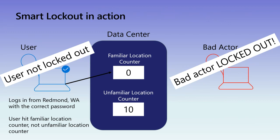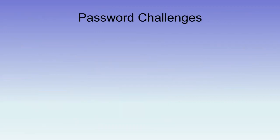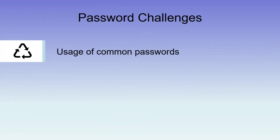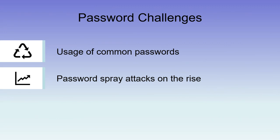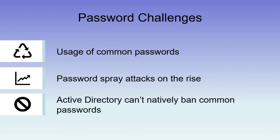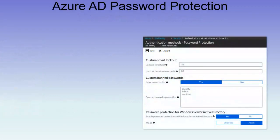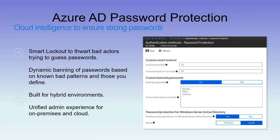But that relies on our passwords and our credentials being entered — and we really have some challenges with our passwords. People use common passwords regularly and reuse them. There are password spray attacks on the rise, so they're being cracked and hacked. Active Directory can't natively ban common passwords, but when you've got Azure AD Connect enabled you can protect both using Smart Lockout and using the standard banned passwords list from Microsoft plus a custom banned list — you can even enable this on Windows Server Active Directory as well.